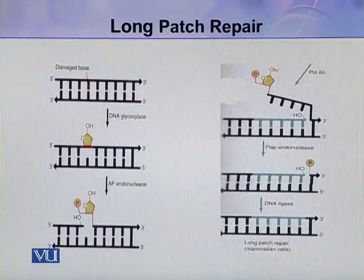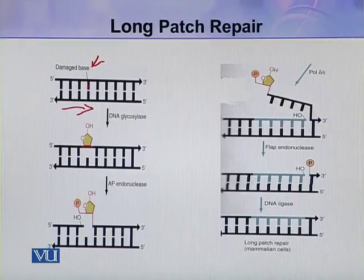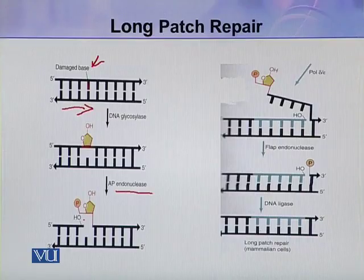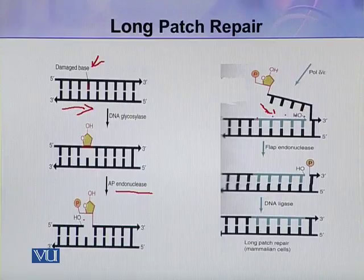Here you can see the long patch repair diagram. This is the damaged DNA where the base is excised by DNA glycosylase, then AP endonuclease introduces a nick, and then DNA polymerase delta or epsilon adds new nucleotides.